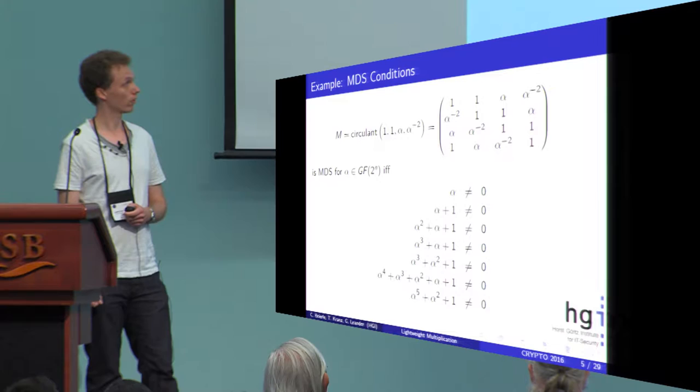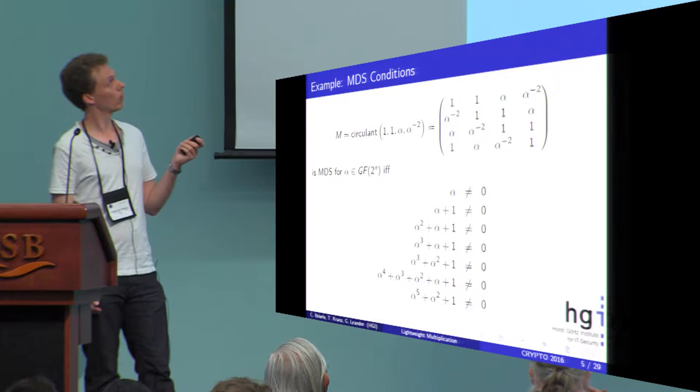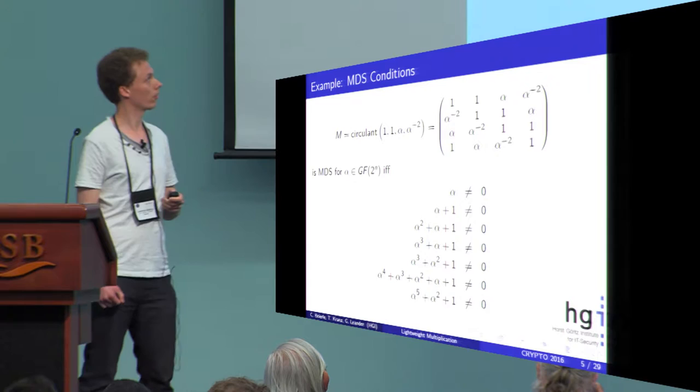For example, alpha should not be equal to zero because otherwise we would have a zero entry, which is a one times one matrix with determinant zero. If you consider other matrices, then you see that the other equations have to hold.